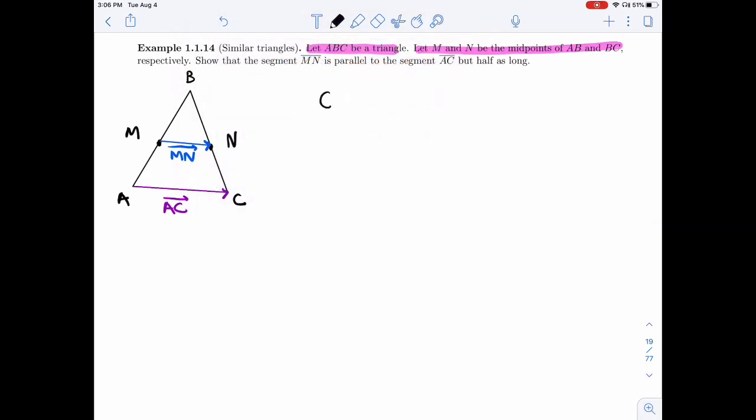That's our goal, to show that MN is parallel. So MN is going to be some constant times AC. That's what parallel means. But I want it to be half as long.